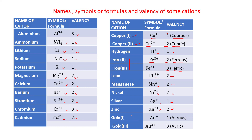Similarly, more than one valency. Gold(I): Au+, valency is 1, and this is called aurous. Gold(III): Au3+, valency is 3, and this is called auric.